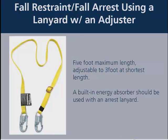Option two is a fall restraint and arrest system using a lanyard with an adjuster — five-foot maximum length, adjustable to three feet at its shortest. You must use the shortest length to be properly restrained and then determine the maximum allowable length with the adjuster. Five feet is roughly the maximum length that achieves a three-foot short lanyard keeping you in restraint. A built-in energy absorber should be used when an arrest lanyard is being used, and it should be integrated into the lanyard rather than added as a separate piece, as any addition affects the overall calculated fall length.